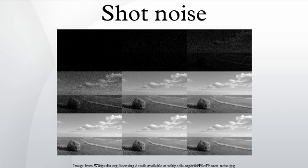Shot noise exists because phenomena such as light and electric current consist of the movement of discrete packets. Consider light as a stream of discrete photons coming out of a laser pointer and hitting a wall to create a visible spot. The fundamental physical processes governing light emission are such that these photons are emitted from the laser at random times, but the many billions of photons needed to create a spot are so many that the brightness — the number of photons per unit time — varies only infinitesimally with time.